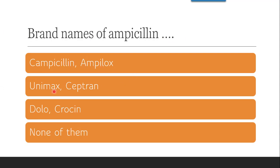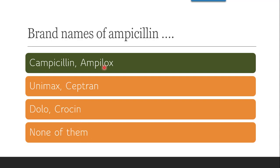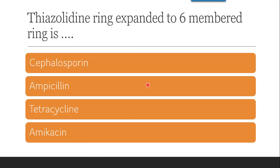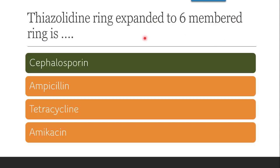The next question is: brand names of ampicillin are — Campicillin/Ampilox, Unimax/Septran, Dolocrocin, or none of them? The correct answer is Campicillin and Ampilox. The next question is: thiazolidine ring expanded to a 6-membered ring is found in which antibiotic — cephalosporin, ampicillin, tetracycline, or amikacin? The 5-membered thiazolidine ring expanded to a 6-membered ring is present in cephalosporin.